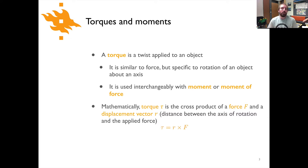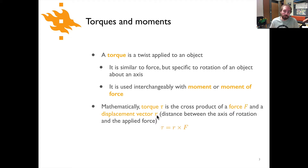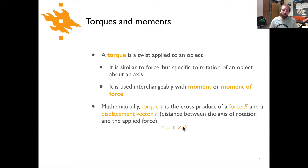Mathematically, the definition is fairly simple: the torque τ (the Greek letter tau) is the cross product of a force F and a displacement vector R. You don't need to worry about what the cross product means if that's unfamiliar — it's simply a vector mathematical operation, and that's how you calculate the torque.